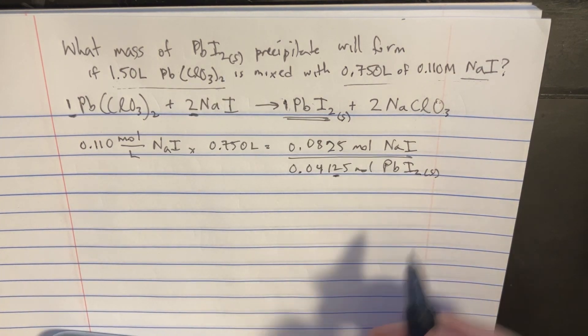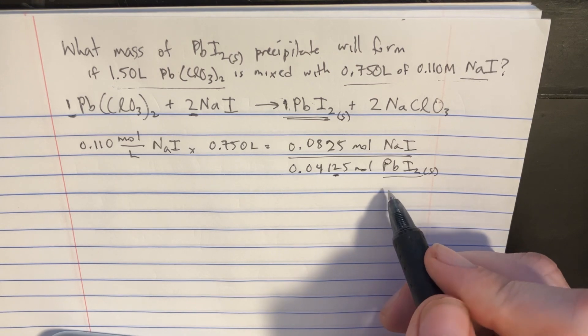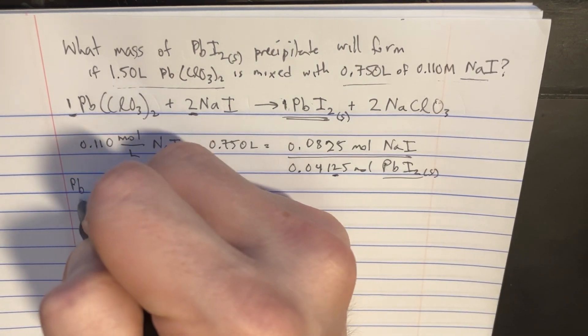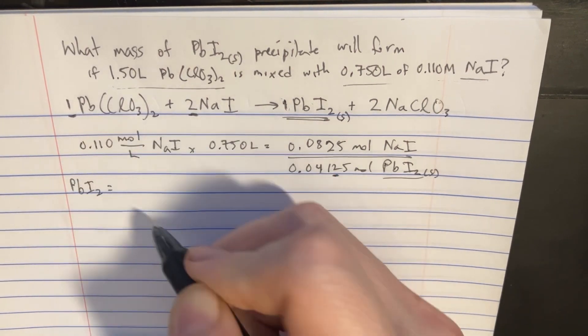Alright, so let's go and figure out what the molar mass is here. PbI₂ is going to be equal to lead is 207.2,